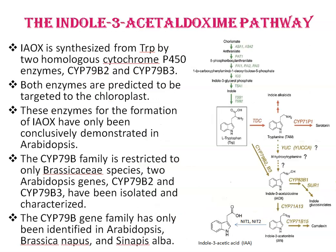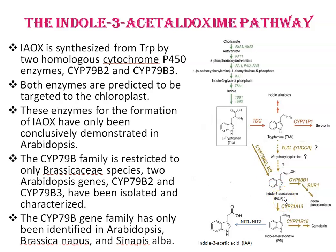Next is the indole-3-acetaldoxime (IAOX) pathway, shown by mustard-colored arrows. IAOX is synthesized from tryptophan by two homologous cytochrome P450 enzymes, CYP79B2 and CYP79B3, both predicted to be targeted to the chloroplast. The formation of IAOX by these enzymes has only been conclusively demonstrated in Arabidopsis.